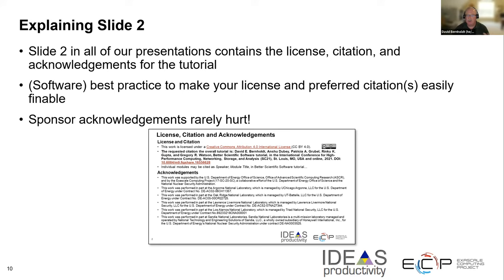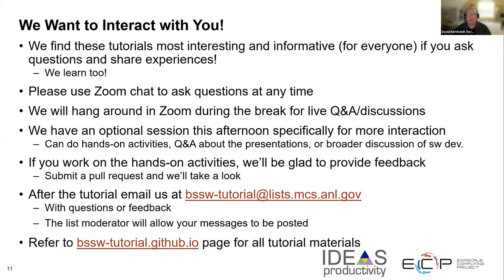In all of our presentations you'll see a slide with the license for the content, which is a Creative Commons license. It has the citation we request if you want to refer to this work, and also the acknowledgements — including our sponsor, the Exascale Computing Project, that has made this work possible. This is maybe the first example of a good practice: it's always good to have a license, provide preferred citations for your work, and acknowledge your sponsors.